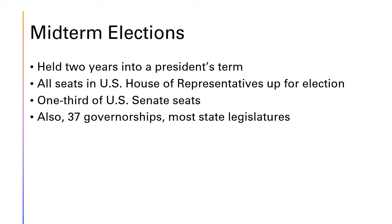In midterm elections, all 435 seats in the United States House of Representatives are up for election, since members of the House serve only two-year terms. Additionally, one-third of the Senate is up. With Senate terms set at six years apiece, Senate elections are staggered, with one-third of its seats up every two years. There also tends to be a lot at stake at the state level, with 37 of the 50 governorships up for election, and about three-quarters of the roughly 7,500 state legislative seats across the U.S. up for election.